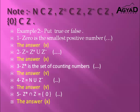The last one, number 5: Z positive intersection with the set {0} equals the set {0}. Intersection means the common elements. The common elements between Z positive and the set of integers — there is no element common between Z positive and {0}, so this statement is false.